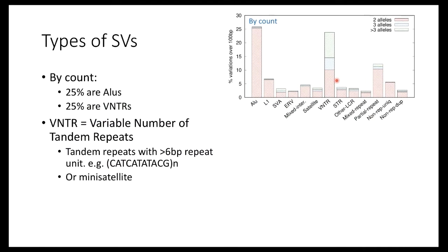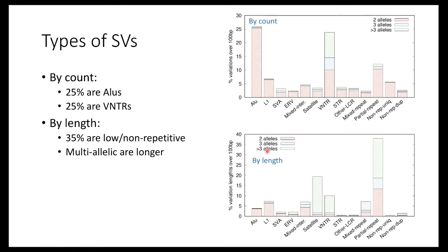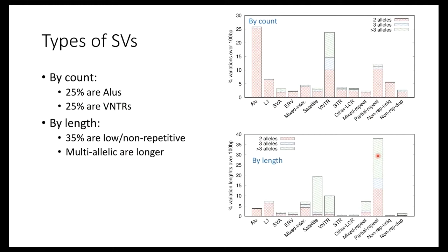On the other hand, if you do a similar plot by length — summing over the base pairs — you can see which type of structural variation affects most of the genome. Although there are lots of ALUs, because they are very short at only ~300 base pairs, they occupy less than 5% of total structural variation length. But this small green bar, although only a couple percent by count, now becomes almost 20% of all structural variation by length. These events are very long and often harbor genes affecting immunity and other functions.